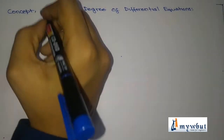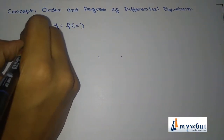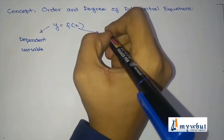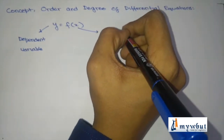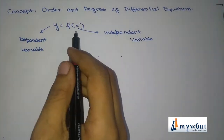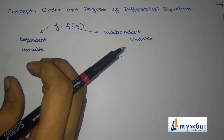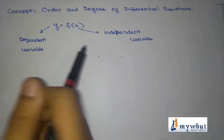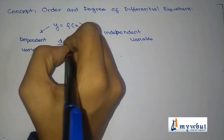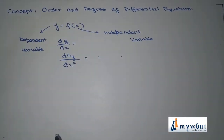How do we define an equation? Suppose y is equal to f(x), where y is the dependent variable and x is the independent variable. That is, y depends on whatever value x has. Suppose x has value 5, y has some other value, and for a value of x that is 10, y has some other value. We can find out the derivative of it, that is dy by dx, d²y by dx², and similarly we can find out the derivative of any function.